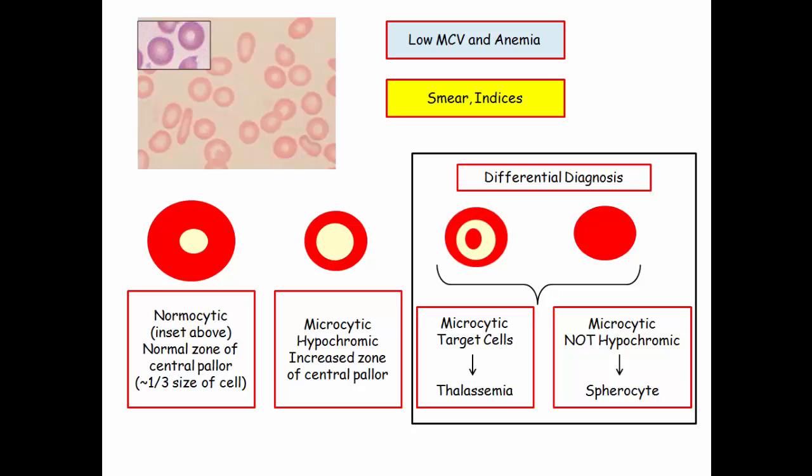Pertinent to the smear and our differential diagnosis of microcytic anemia, the smear helps exclude other causes. Thalassemia patients also have a low MCV, but their smear will be replete with target cells. The patient with spherocytosis starts with normal-sized red blood cells when emerging from the bone marrow. After a few trips through the spleen where macrophages gobble up that abnormal membrane, the cells start to shrink, but they are not hypochromic.